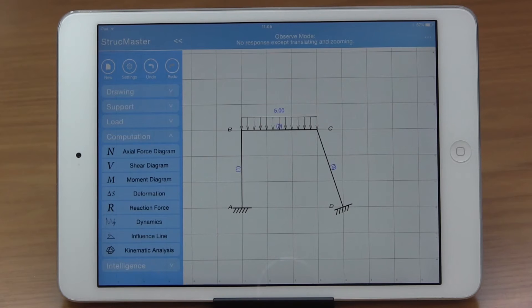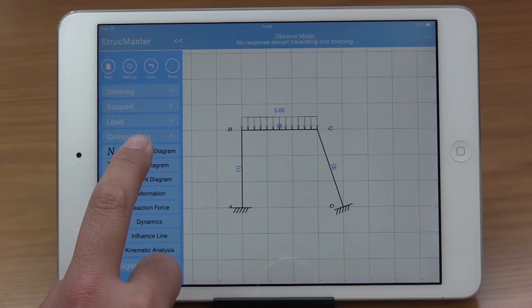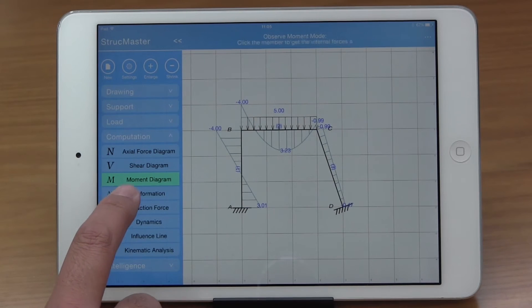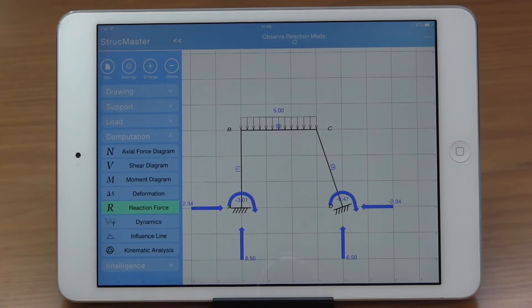The analysis procedure is automatically done after you define the structure. You can check results for axial force, shear, moment, displacement, and support reaction.